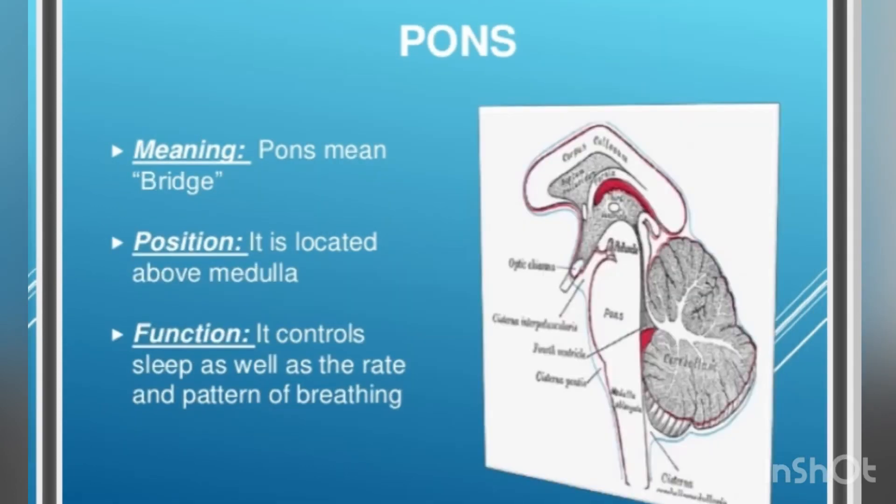Pons meaning: pons means bridge. Position: it is located above the medulla. Function: it controls sleep as well as the rate and pattern of breathing.